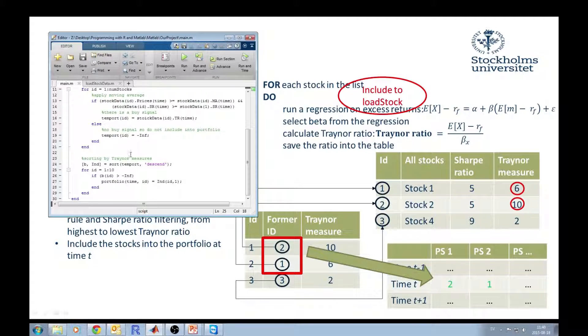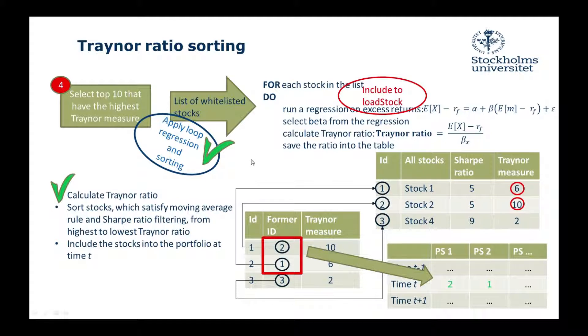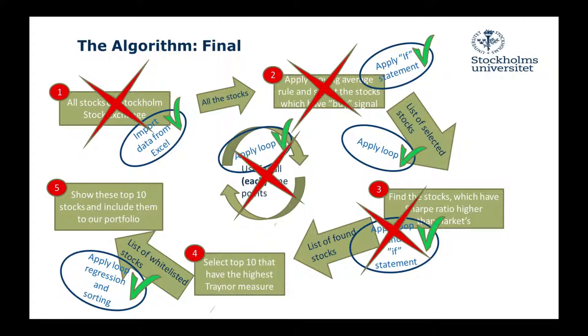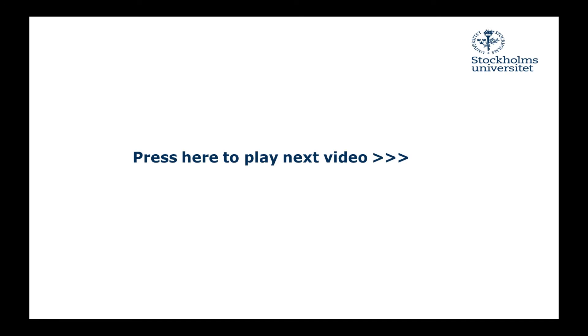This is all for the sorting and Treynor measure calculation. Today we did two things: we calculated the Treynor ratio and sorted the stocks, applying it with a big loop so we have the portfolio for each point in time. With this, we have crossed out logical block number four. Thank you for watching — press here to play the next and final video in the Coding in MATLAB series. Good luck and have a nice day, bye!